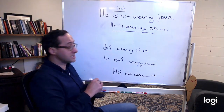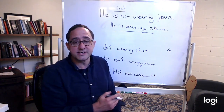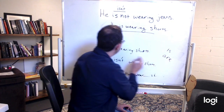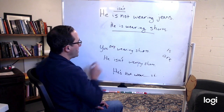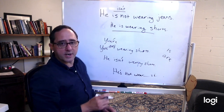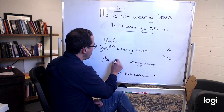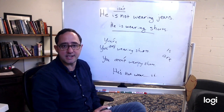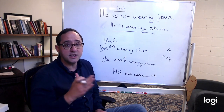Let's contract for other ways. Remember for he, she, it, the to be form is 'is.' What is it when I say 'you' or 'we'? It's 'are,' right? So 'you are wearing shorts' — how do I contract it? You're wearing shorts. How would I contract it for a negative? You aren't wearing shorts. Aren't — that's a lot of consonants together. Aren't. You aren't.